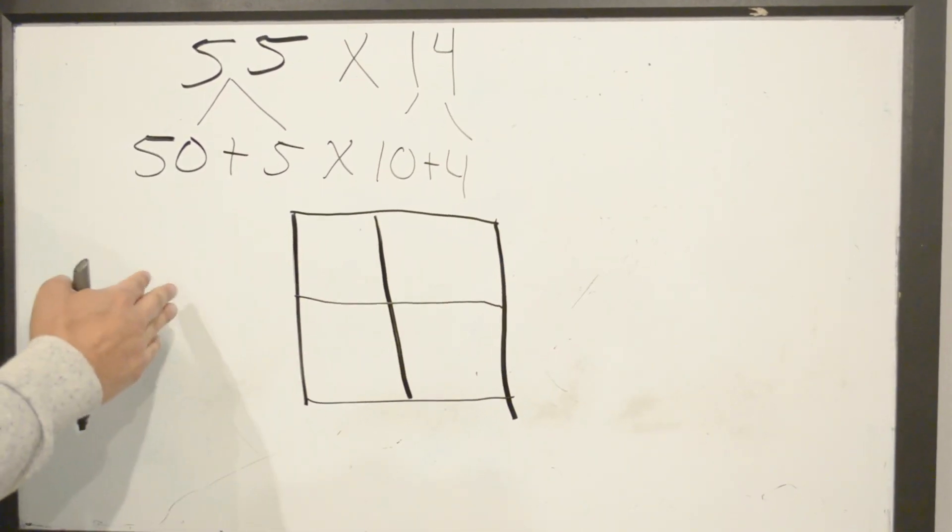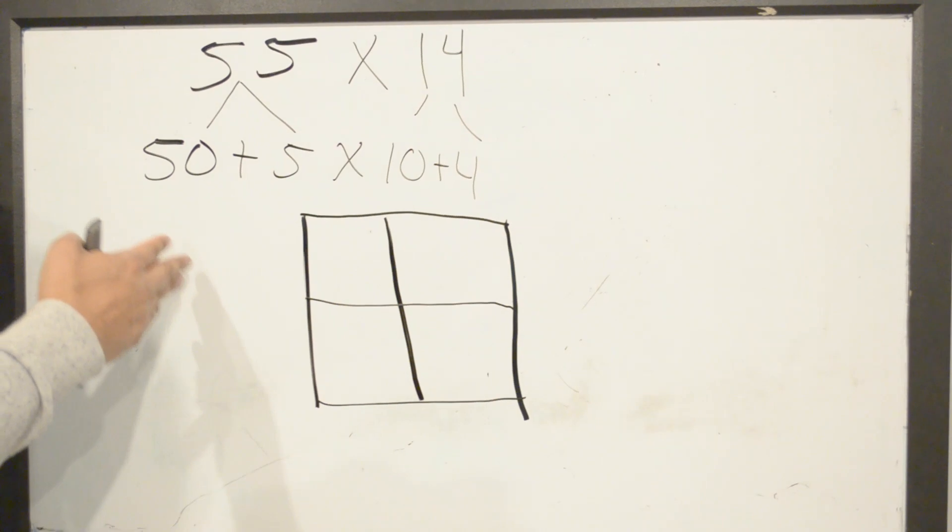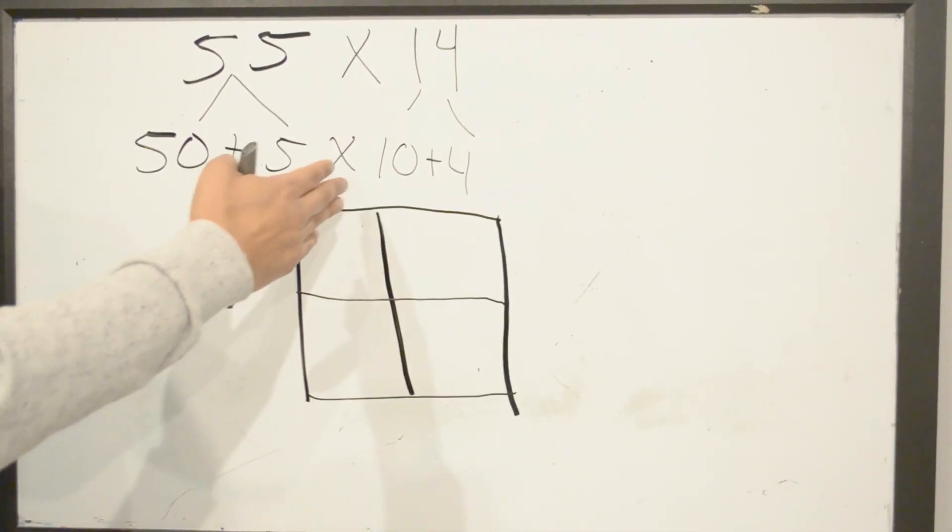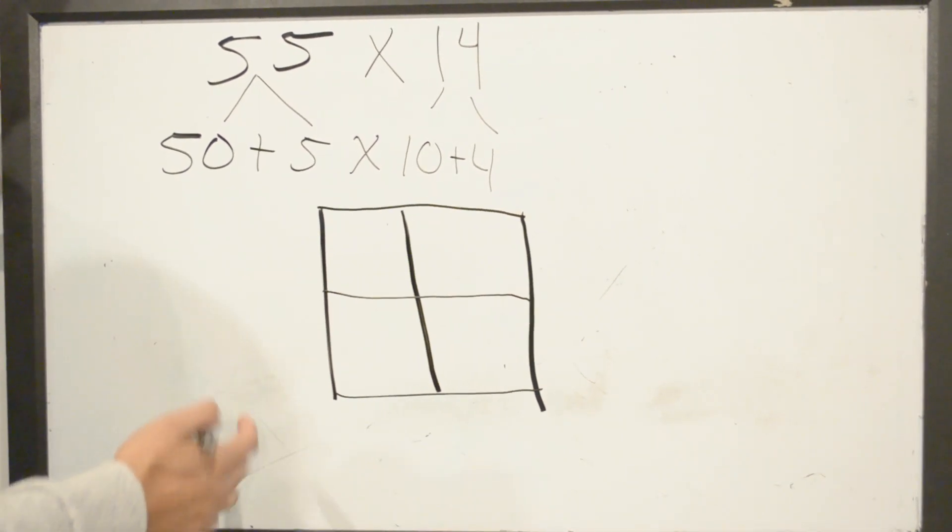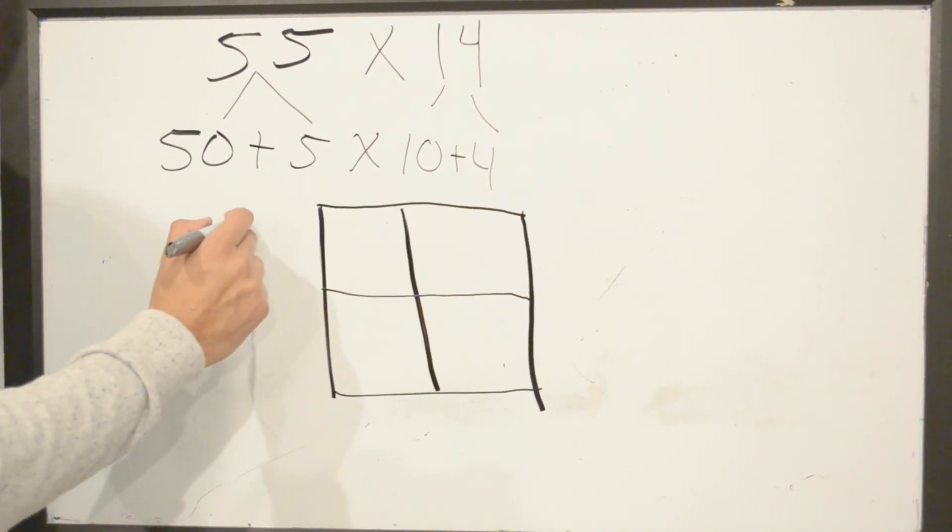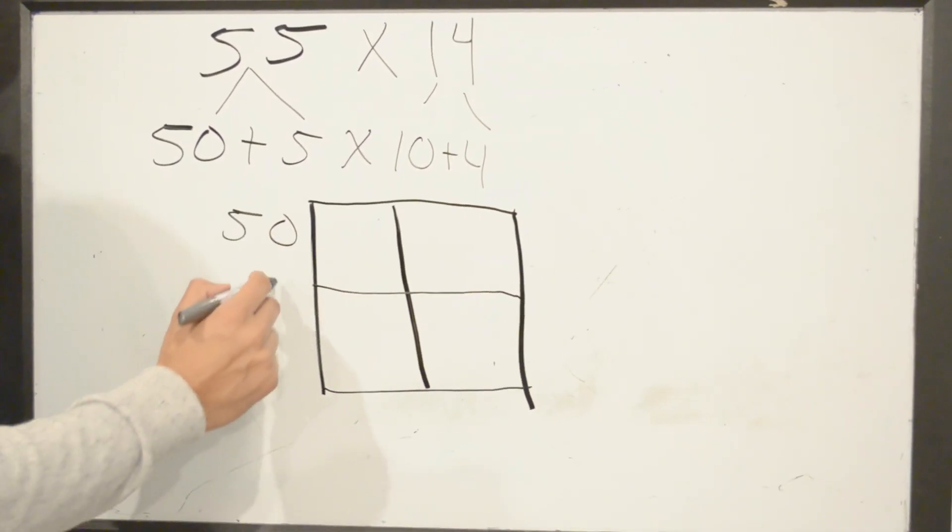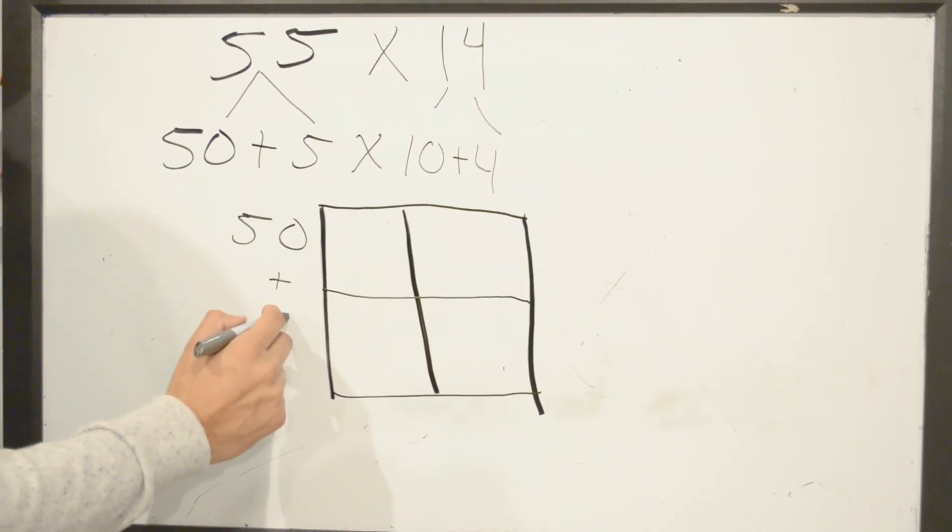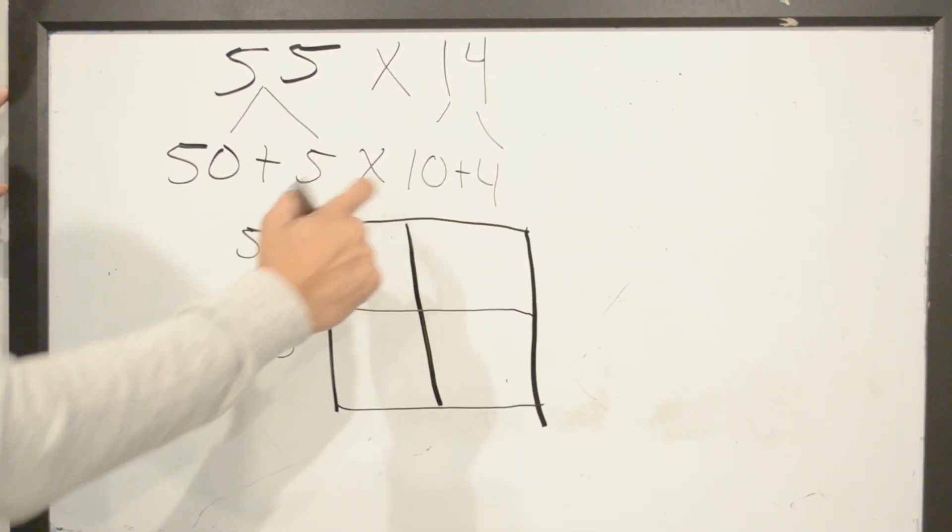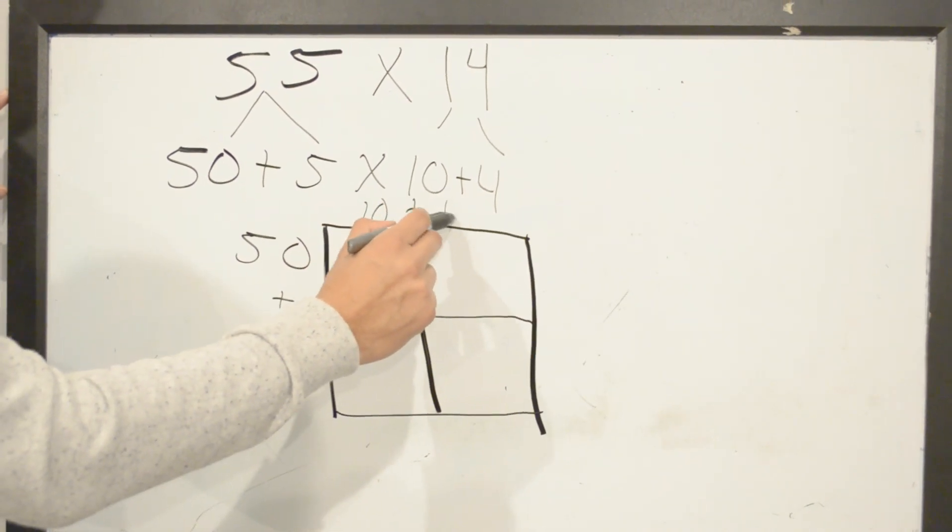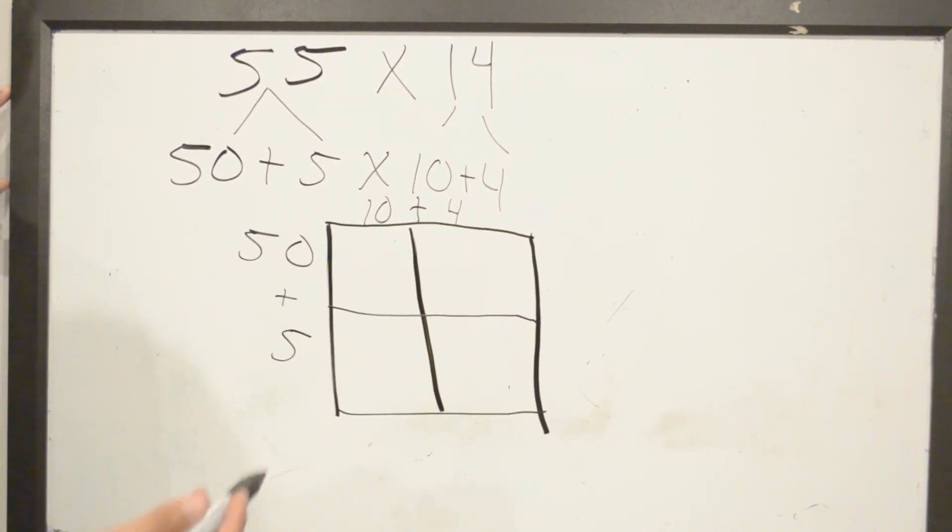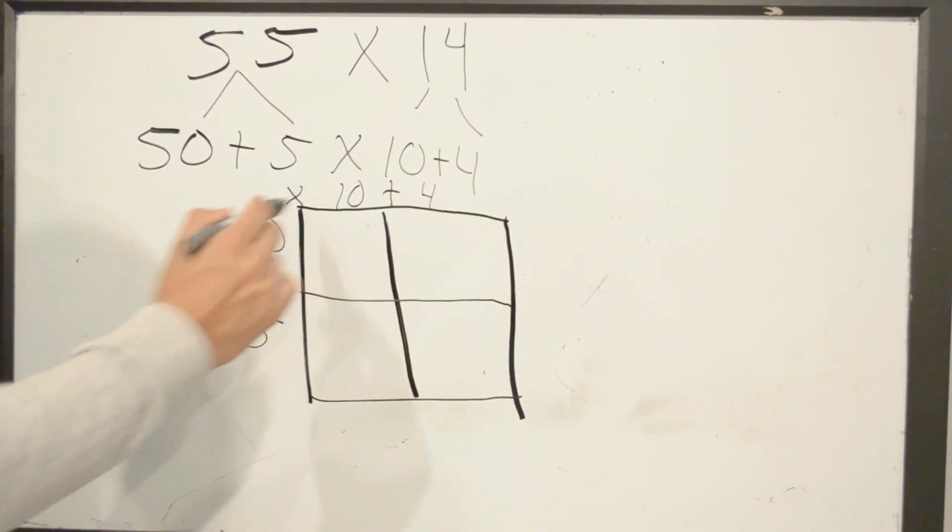Once again, it does not matter if you have big numbers on the left or the big numbers on the top. I usually use the bigger numbers on the left. I will put 50 here and 5 in the bottom, use 10 here and we'll put 4 here. We're still multiplying, so don't forget to put your multiplication sign right on the corner.